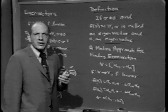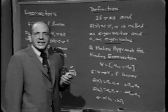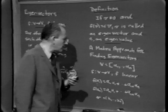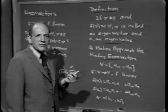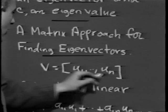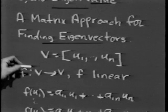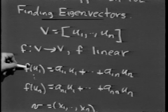All I care about for now is that you understand what an eigenvector means and what an eigenvalue is. Quickly summarized: if f maps a vector space into itself, an eigenvector is any non-zero vector which has its direction preserved under the mapping f — that f maps it into a scalar multiple of itself. There is a matrix approach for finding eigenvectors, and it gives us a very nice review of many techniques we've used previously in our course.